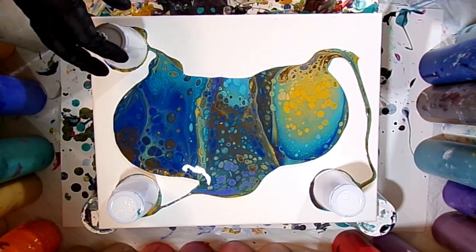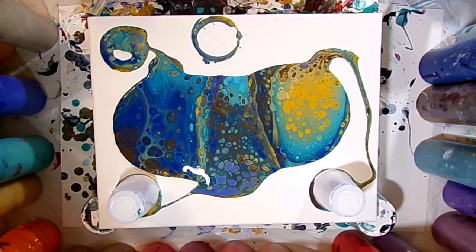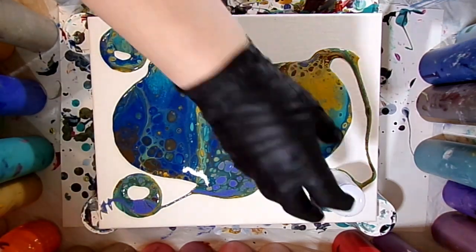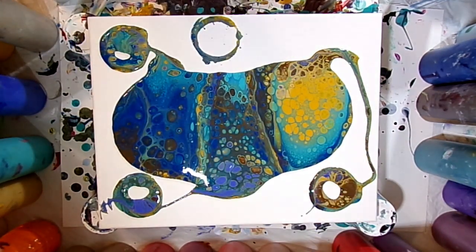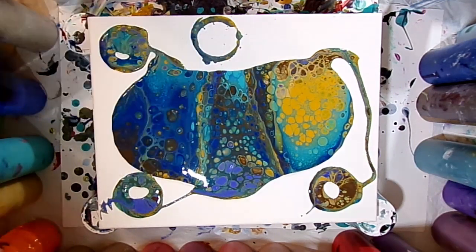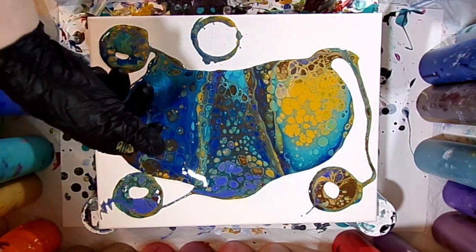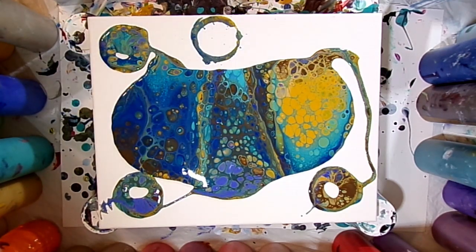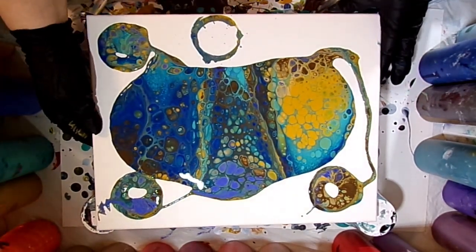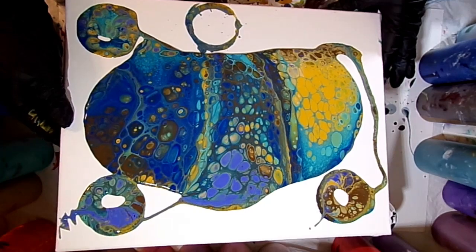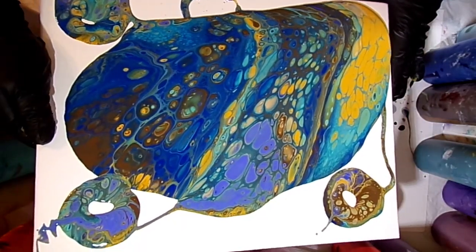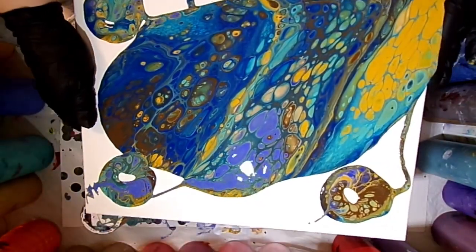Some beautiful cells popping up right away. Getting that last little bit of paint out of each cup. This is an 11 by 14 inch canvas and each of those cups are three ounce cups. With a flip cup, make sure that you have enough paint. If you have too little paint, then you're trying to stretch those cells out too much and your cells will kind of lose if you don't have enough paint.